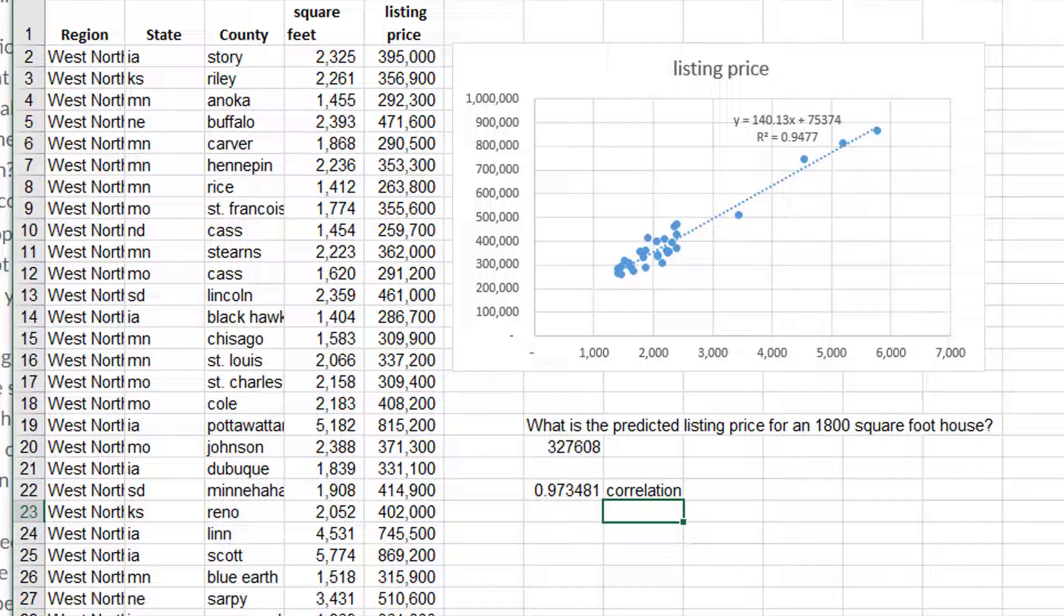It is not what proportion of the dots are on the line. That's not what it means. It's not what proportion of the data our model is close to or anything like that. It is what proportion of the variation in listing price is explained by variation in our predictor, in square footage. That's what the 94.77% is. So you can interpret it in that way.